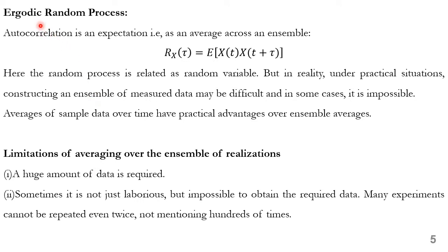Let us now proceed with ergodic random processes. We know that autocorrelation is an expectation and it is an average across an ensemble. That is, R_x(τ) = E[x(t)·x(t+τ)]. So here the random process is treated as a random variable.